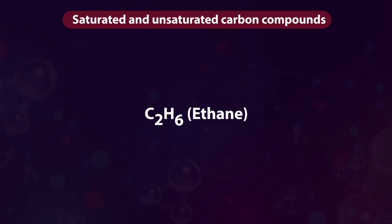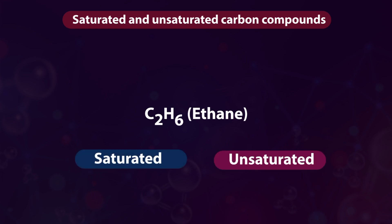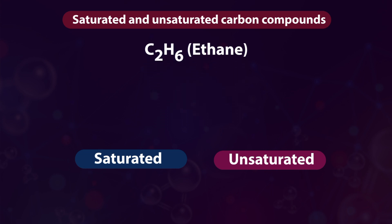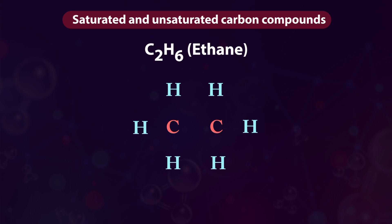C2H6 — Ethane. Is it saturated or unsaturated? Let us draw its structure to find out. First, link carbon with carbon using a single bond.